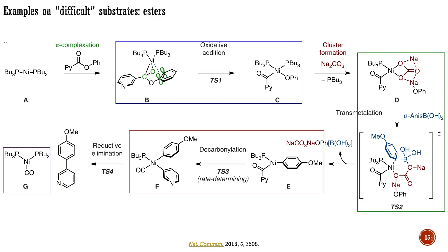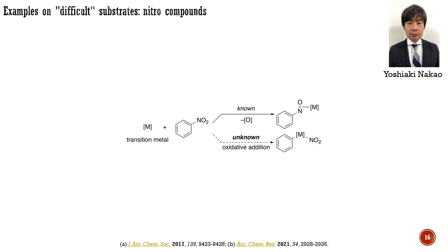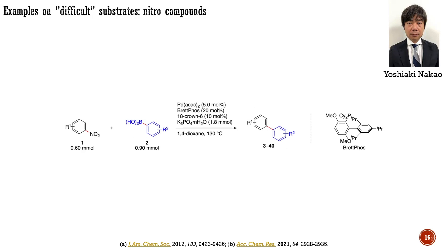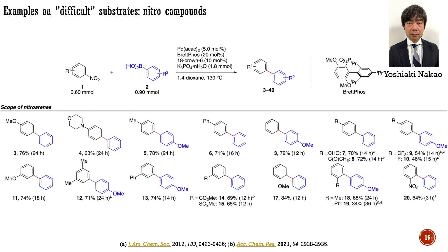Until 2017, nitro compounds were rare substrates for cross-coupling reactions, despite being readily available commercial substrates and common intermediates in the preparation of aryl halides by the Sandmeyer reaction. The limited use of nitro compounds in metal-catalyzed reactions is due to the nitro group acting as a mild oxidant toward low-valent transition metals, leading to nitroso compounds and other reduction products. The group of Nakao successfully overcame this limitation and achieved the coupling of nitroarenes with aryl boronic acids using a palladium-Bretphos catalyst. The breakthrough was the unprecedented oxidative addition of an aryl-nitro bond toward the palladium center stabilized by the bulky Bretphos ligand. Owing to the generality of this elementary step, a wide range of nitroarenes and boronic acids could be applied for the modified Suzuki coupling.